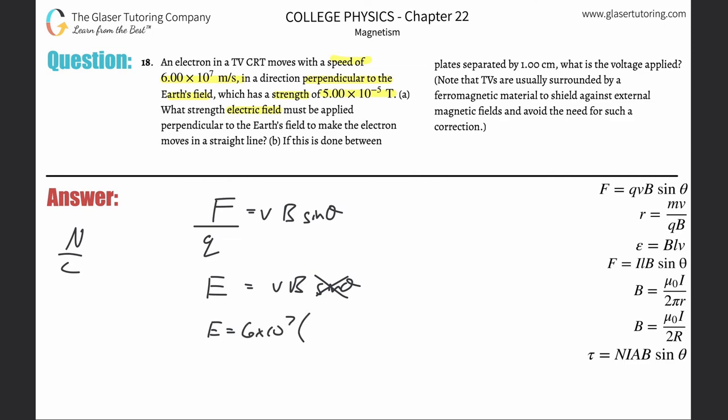Isn't this 6 times 10 to the seventh multiplied by the magnetic field of 5 times 10 to the minus fifth? And look, lo and behold, that's what you got.